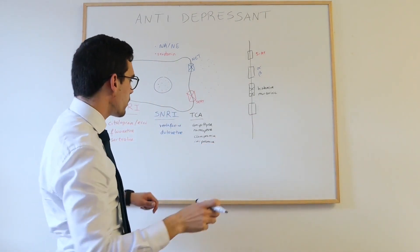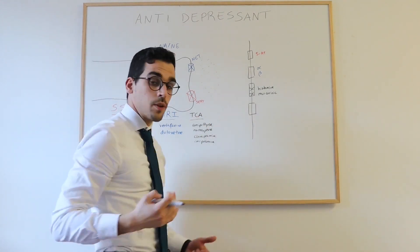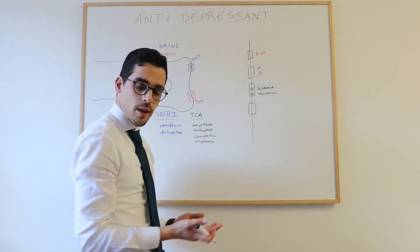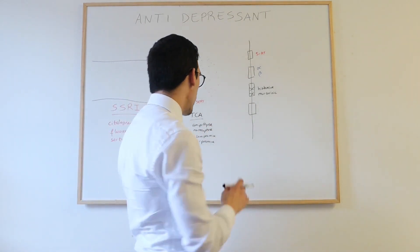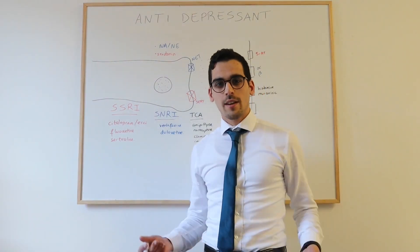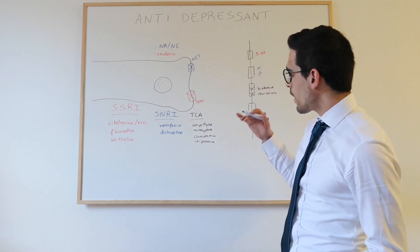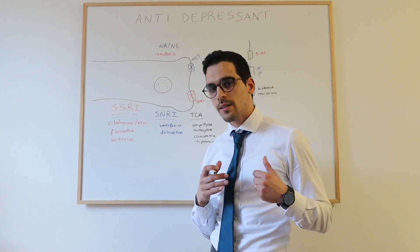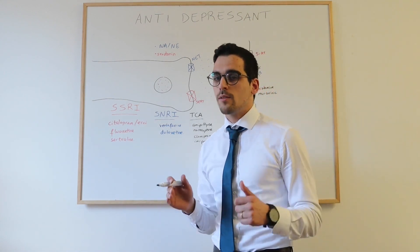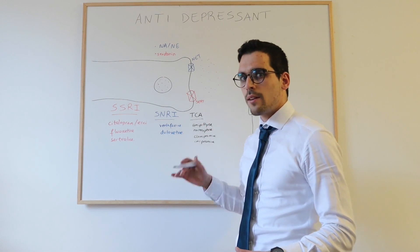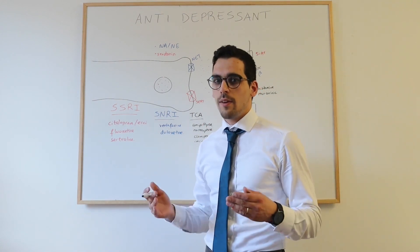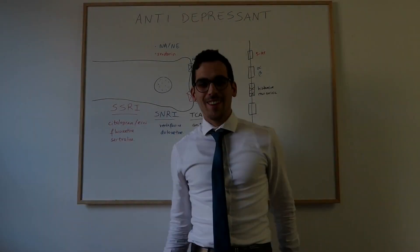Amitriptyline and nortriptyline can also be used for prevention of migraines and for neuropathic pain as additional indications. Tricyclic antidepressants can also block sodium channels in the heart, producing an effect similar to antiarrhythmic drugs, which means they can cause serious cardiac abnormalities.